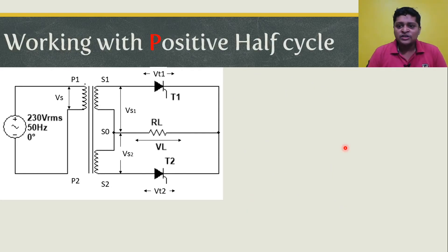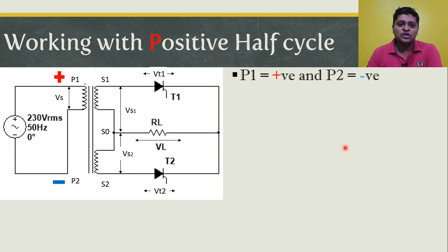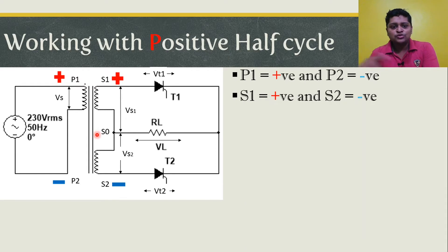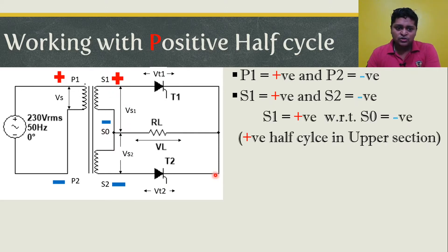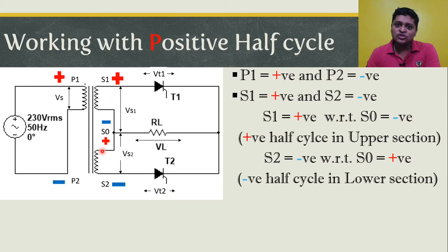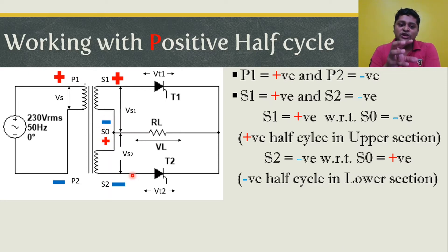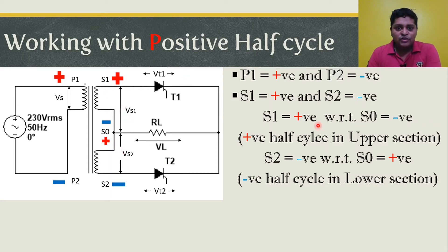Let's look at the positive half cycle. With 230V, 50Hz AC applied, the positive half cycle makes P1 positive and P2 negative, inducing S1 positive and S2 negative across the secondary. Since S0 is the null point, S1 is positive with respect to S0, and S2 is negative with respect to S0. S0 develops both positive and negative potential with respect to the two ends — that's why it is designed to be at null or zero potential.